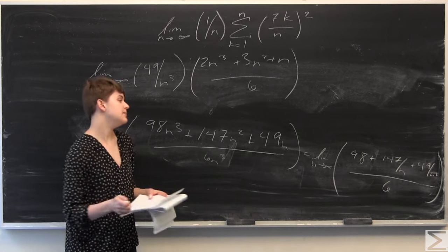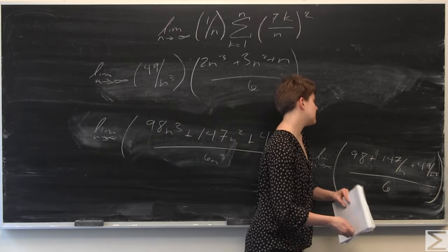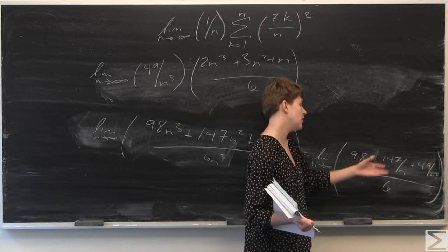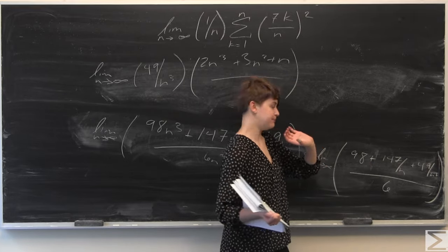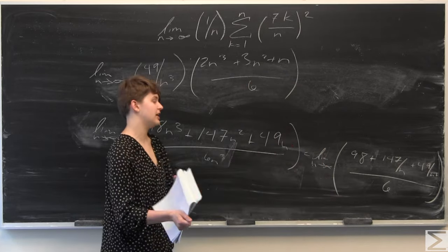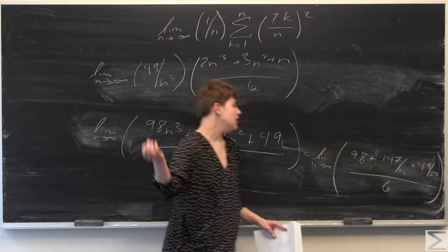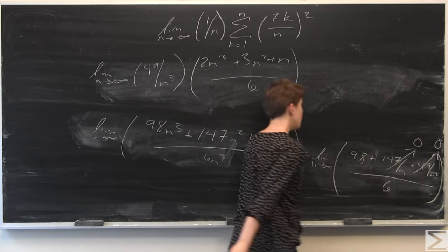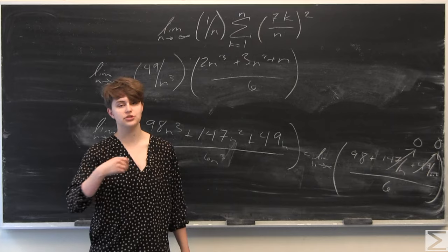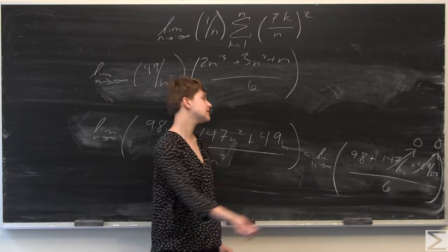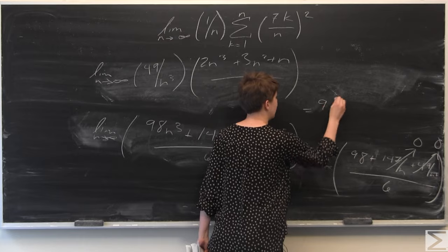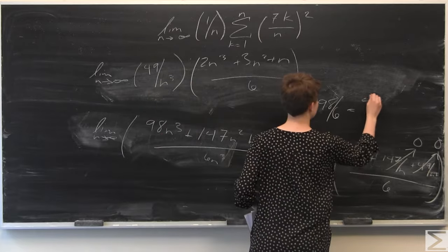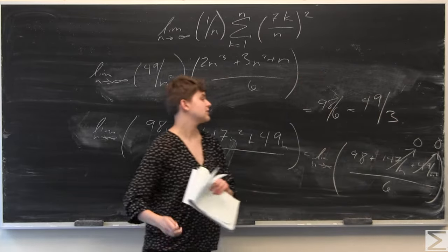So we take the limit as n goes to infinity of each of these terms. The terms 147 over n and 49 over n squared are going to go to 0. And we have one term that does not depend on n, which is 98 over 6. So it's going to end up equaling 98 over 6, which when we simplify is going to equal 49 over 3, which is our final answer.